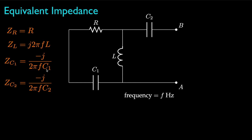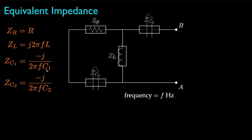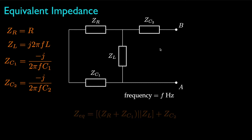Using those impedances, we can replace each element with its complex-valued impedance, and then use the same rules we use for equivalent resistance. That will result in this equation for the equivalent impedance between nodes A and B.